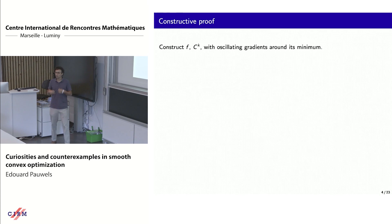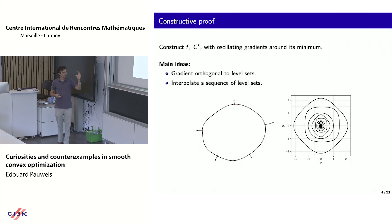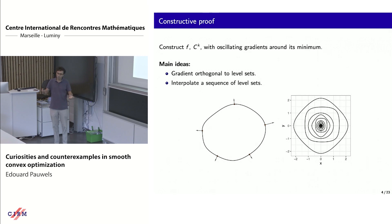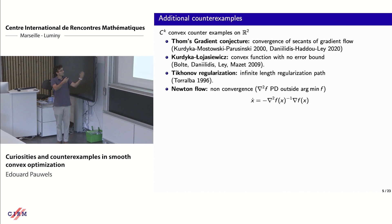The proof is constructive. We construct the pathological function f to be convex and CK so that it has oscillating gradients around the minimum. We use mainly two ideas: first, gradients will be orthogonal to level sets, so we consider a sequence of level sets oscillating in a way that we control; second, we interpolate that sequence of level sets to build a function for which each element of the sequence is a sub-level set. Our main abstract contribution is a solution to this smooth interpolation problem. Once we have that general tool, we can construct many more pathological examples — convex CK potentials that do not satisfy certain properties.